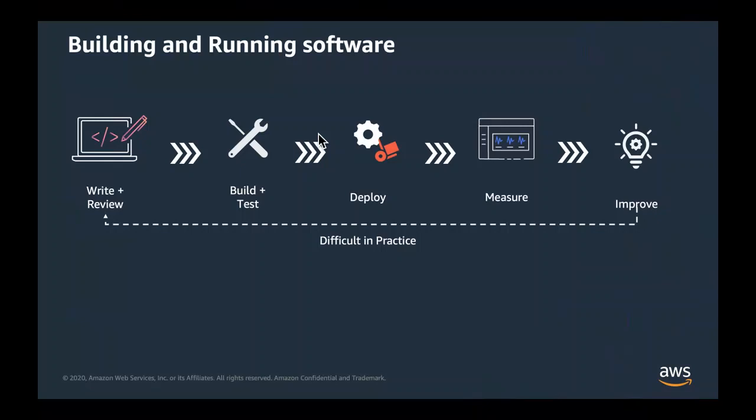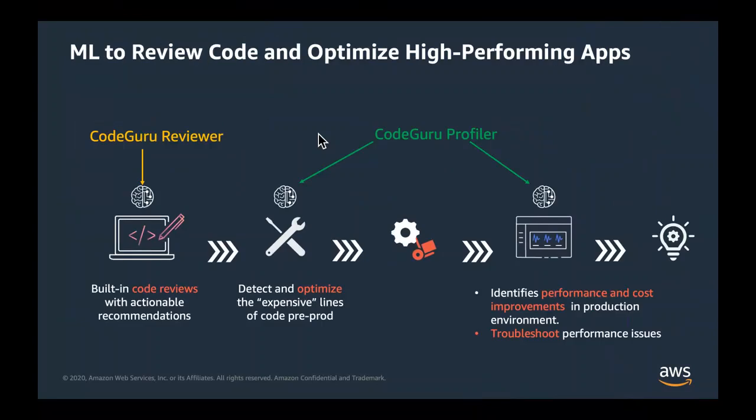This workflow is really difficult in practice. It requires both deep expertise all along the pipeline, as well as a lot of tedious work. You want deep expertise to review your code and make sure there are no issues. Instrumenting and monitoring can be quite tedious, but you also need deep expertise to understand where and how to improve the software. Based on that, I want to talk about two services that bring machine learning and automated reasoning to assist developers.